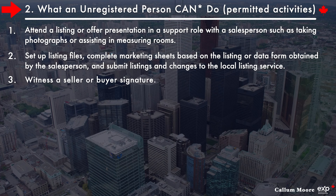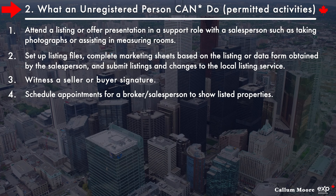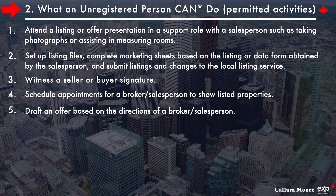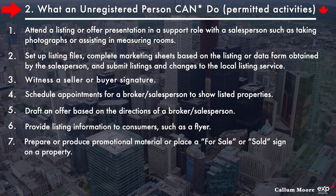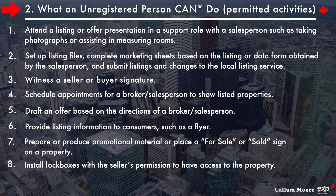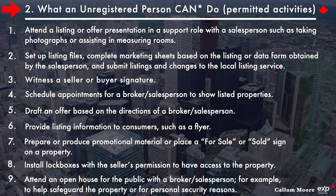Three, witness a seller or buyer's signature. Four, schedule appointments for a broker or salesperson to show listed properties. Five, draft an offer based on the directions of a broker or salesperson. Six, provide listing information to consumers, such as a flyer. Seven, prepare or produce promotional material, or place a for sale or sold sign on a property. Eight, install lock boxes with the seller's permission to have access to the property. And nine, attend an open house for the public with a broker or salesperson, for example, to help safeguard the property or for personal security reasons.